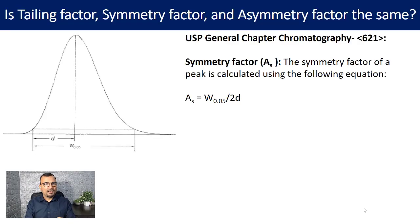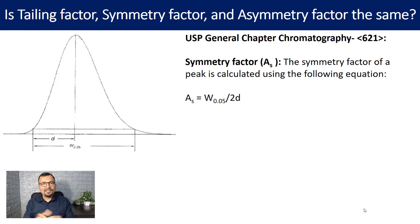Let us begin with the definition for symmetry factor given in USP General Chapter 621, that is Chromatography. This general chapter provides details on how one can calculate the symmetry factor. As you can see on the screen, the symmetry factor is calculated using the formula: AS equals W 0.05 divided by 2D.